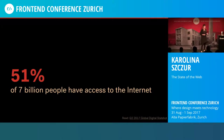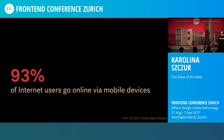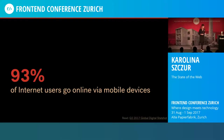51% of 7.4 billion people on this planet have access to the internet, which is not enough — that's such a low number, only 51%. The average network speed caps at a very unimpressive 7 megabits per second. And even more importantly, 93% of internet users go online through a mobile device, so it becomes inexcusable not to cater to handheld devices.